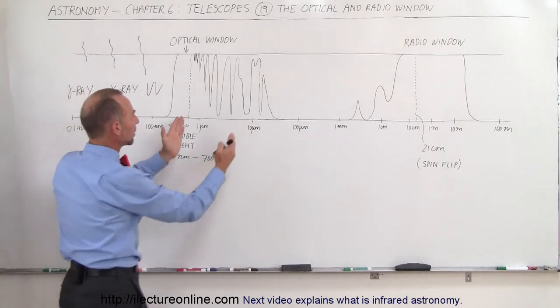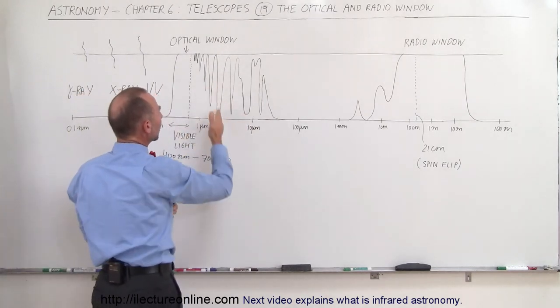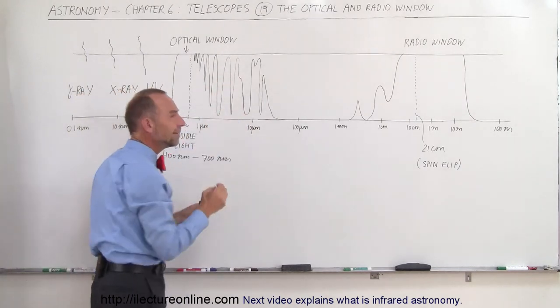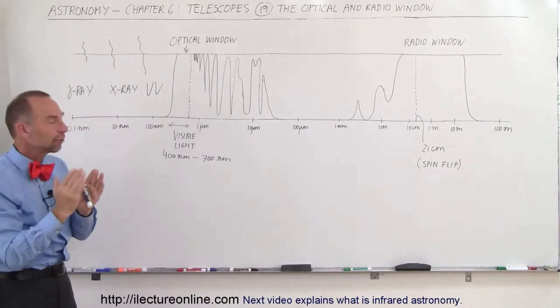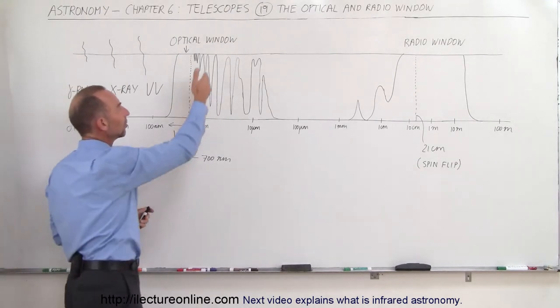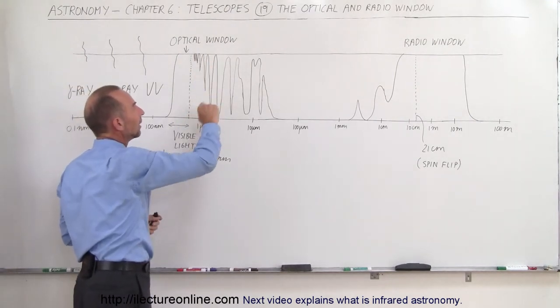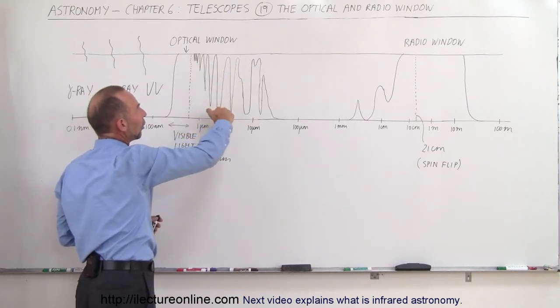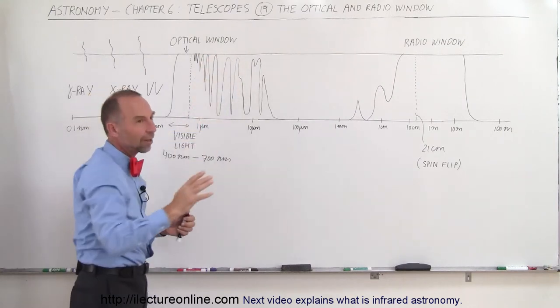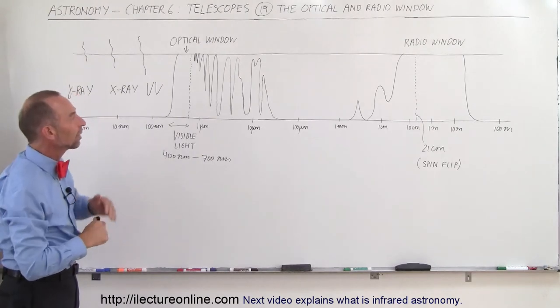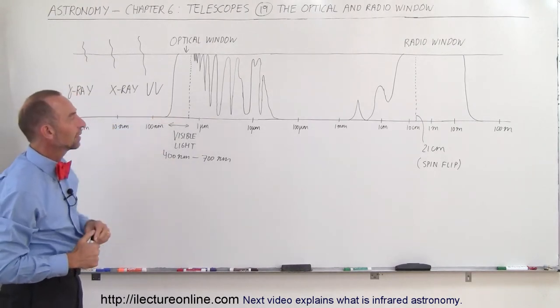What about infrared? The next window here is infrared, and you can see that there are certain places where we can indeed see infrared radiation at very specific wavelengths. In other cases, it's almost completely blocked. And even though we can almost see all the way through, there is still some blocking of infrared radiation coming from space for us to be able to see it clearly.